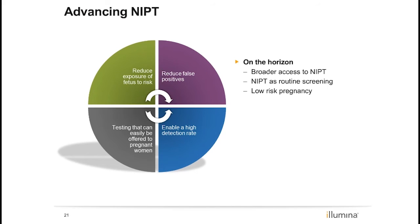Based on what we know about traditional aneuploidy screening and diagnostic testing, what are the ultimate goals for NIPT? The first goal is to reduce fetal exposure to risks associated with procedures like CVS or amniocentesis. We also hope to reduce the rate of false positives while maintaining a high detection rate. Lastly, the goal is to make this a test that can be easily provided to all pregnant women.